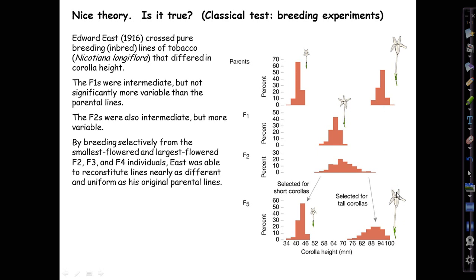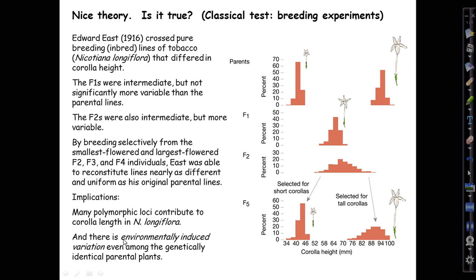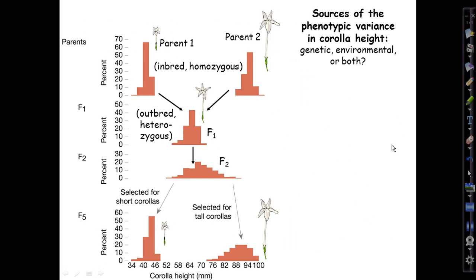What East then did was breed selectively from the smallest and largest flowered F2, F3, and F4 generation individuals trying to reconstitute the parental lines. That was the idea that he had in this second decade after the rediscovery of Mendel. And he did, as you can see from this figure, substantially, if not perfectly, succeed in just five generations in reconstituting a short flowered line that was a lot like the original parent. The tall flowered line seems a bit more variable than the original parent, but clearly he was getting there.